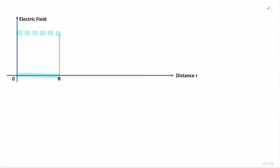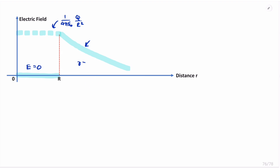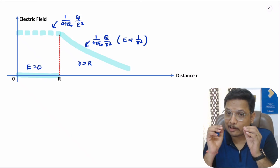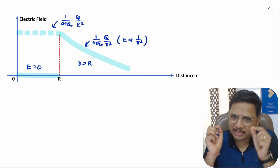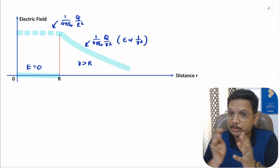To summarize: inside the sphere the electric field is zero; on the sphere it is 1 over 4 pi epsilon naught times Q over capital R squared; and outside the sphere, where r is greater than capital R, it decreases as 1 over 4 pi epsilon naught times Q over small r squared. That is the complete calculation of electric field due to a conducting sphere. I hope you enjoyed this video — please note any questions in the comment section. Thank you for watching.